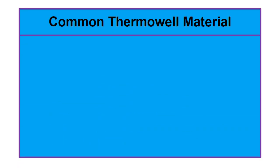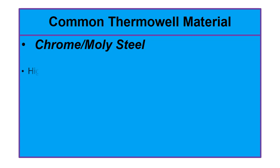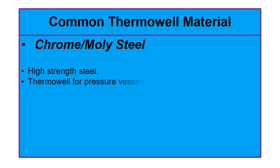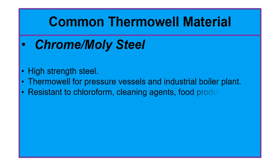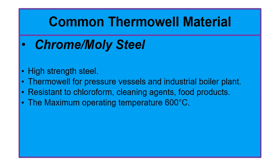The next material is chrome-moly steel. Chrome-molybdenum steel is a high strength steel. It can be used to make thermowells for pressure vessels and industrial boiler plants. Chrome-moly steel is resistant to chloroform, cleaning agents, food products, and carbon disulfide. The maximum operating temperature for chrome-moly steel is 600 degrees centigrade.